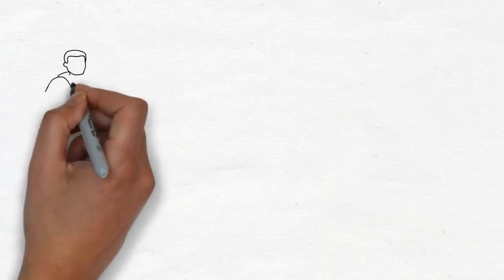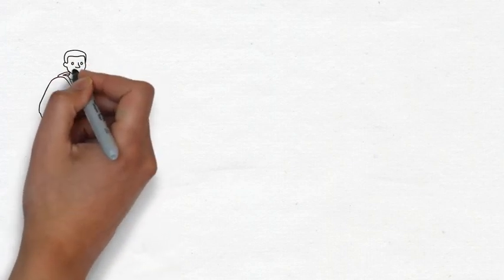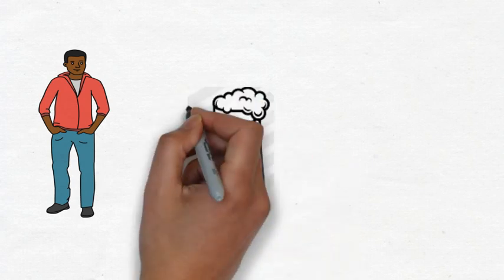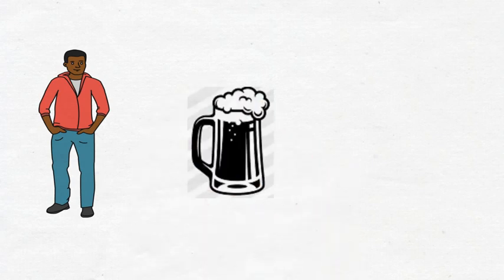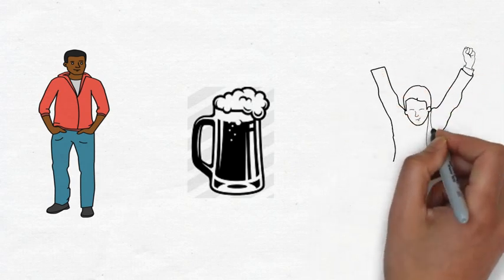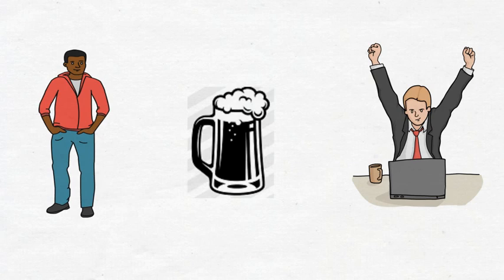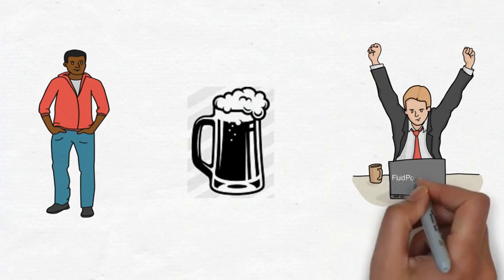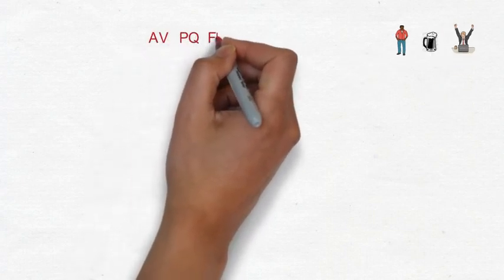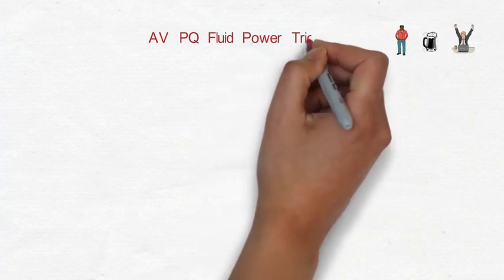Now the trick which you have to remember - there is a person known as Abhi. So this is our trick. What is the trick? A V P Q Fluid Power Trick. A V P Q Fluid Power Trick.